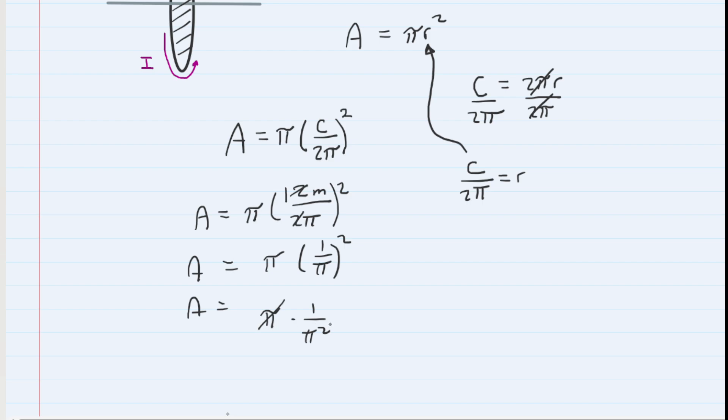But then we have a factor of pi that can cancel. One factor cancels in the denominator. We can see that the area is 1 over pi, and that's going to be meters squared. So now we have the area.